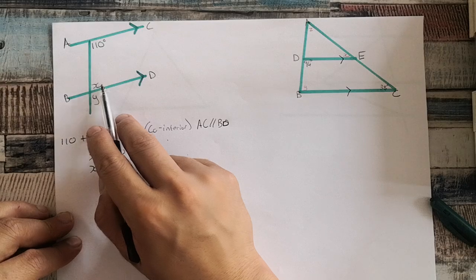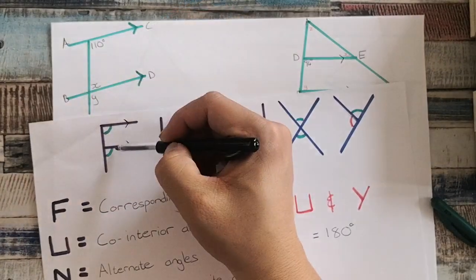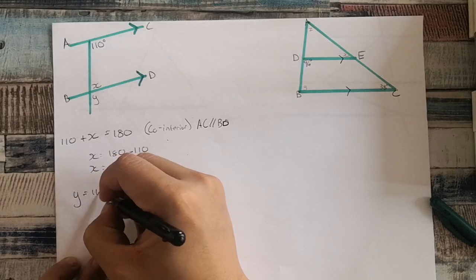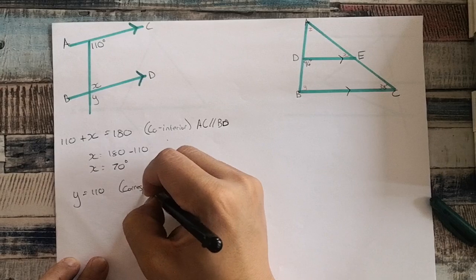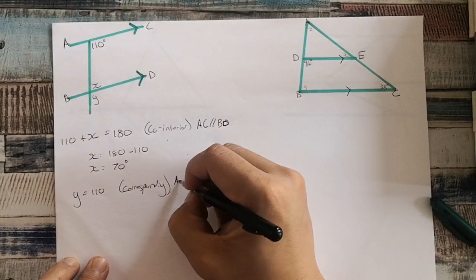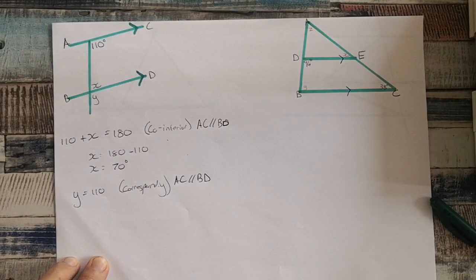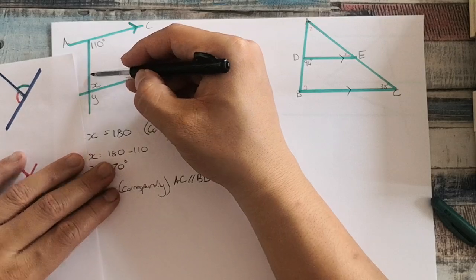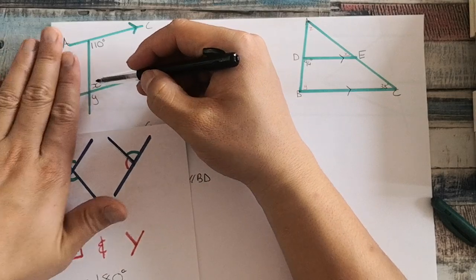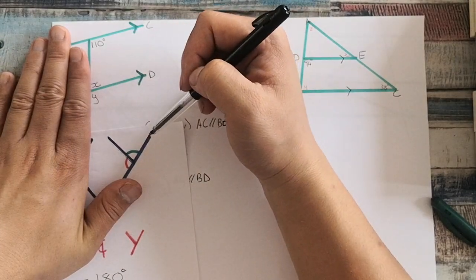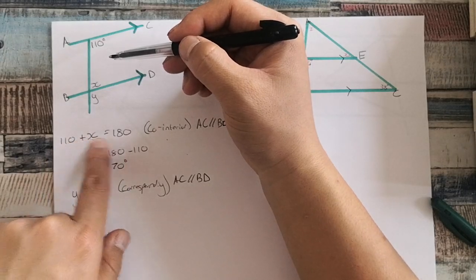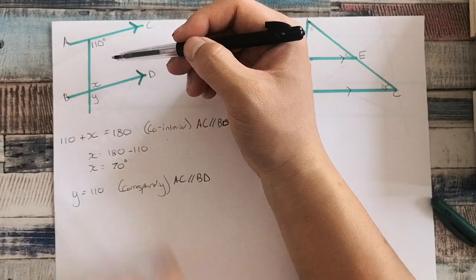How am I going to do Y? This 110 is equal to that Y over there, so Y is equal to 110 because of corresponding angles, and because AC is parallel to BD. Alternatively, you could have seen that because this angle is 70 degrees — angles on a straight line — this Y over here plus 70 must equal 180. And we already know that 70 plus 110 gives you 180 degrees. So you can either use corresponding angles or angles on a straight line.